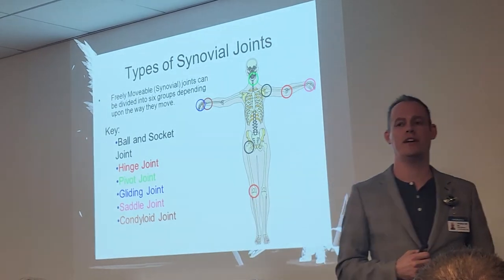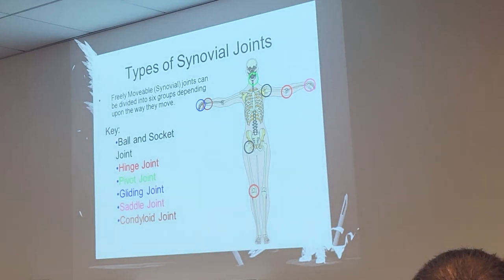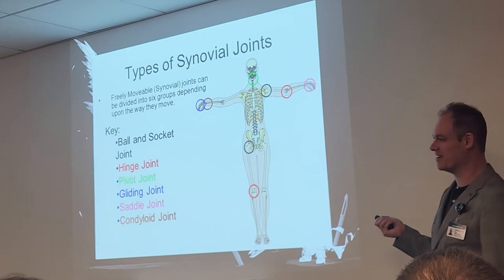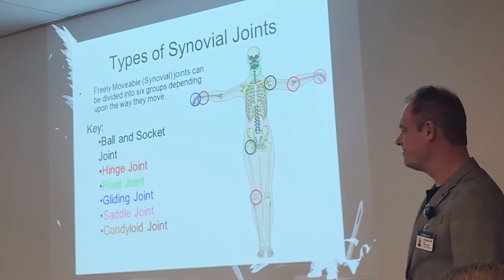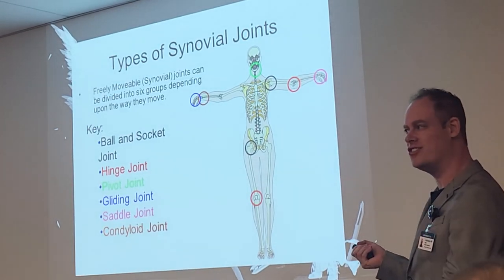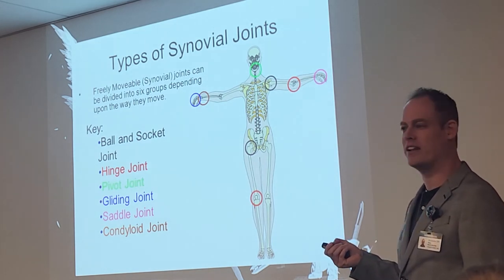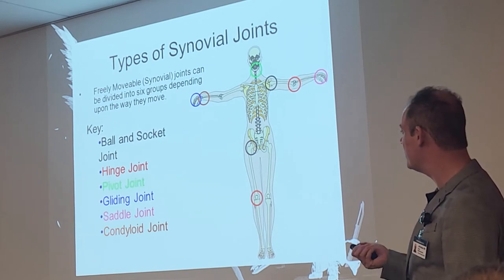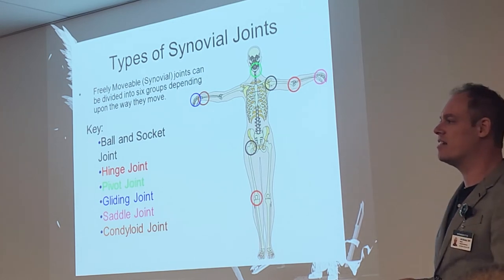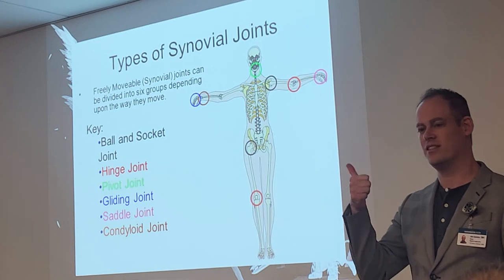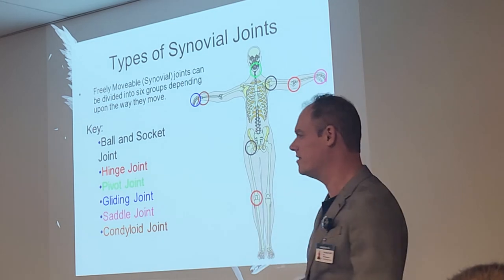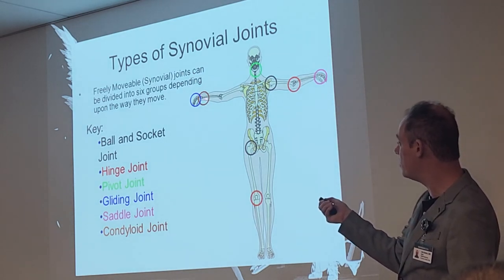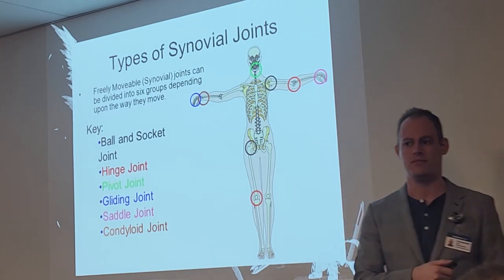Let's go over those synovial joint types one more time. Ball and socket joint — examples are the shoulder and the hip, as color-coded. Hinge joints would be the elbow and knee because they work like a hinge. Pivot joints — like when you turn your neck side to side. Gliding joints — your wrists. Saddle joint — there's only one, the thumb. And condyloid joints, which appear at the wrist where the radius connects, and also in the knee and jaw. The TMJ is condyloid. Joint names almost always are a combination of the two bone names coming together.